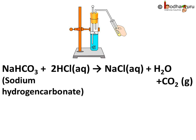In the second test tube, sodium hydrogen carbonate, which is also known as sodium bicarbonate, reacted with acid to produce salt i.e. NaCl, water, and CO₂. This is represented by the chemical equation: NaHCO₃ plus 2HCl gives NaCl plus H₂O plus CO₂, where NaHCO₃ stands for sodium hydrogen carbonate, also known as sodium bicarbonate.